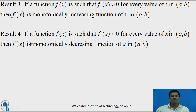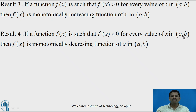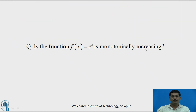The last deduction: if the function f(x) is such that f'(x) < 0 throughout the interval (a, b), then the function f(x) is a monotonically decreasing function in the interval (a, b).